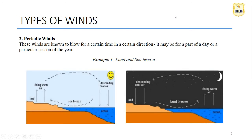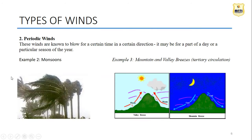The second type is periodic wind. Like the seasons - monsoon, summer, winter - these winds occur in a period of certain time. For example, land and sea breeze: in the morning hours, sea breeze comes towards the seashore, and at night, due to the attraction of the moon, it comes back to the sea. Monsoon is also a periodic system - it never comes in summer or winter, only in the monsoon season. Mountain and valley breezes also occur periodically, day and night-wise.